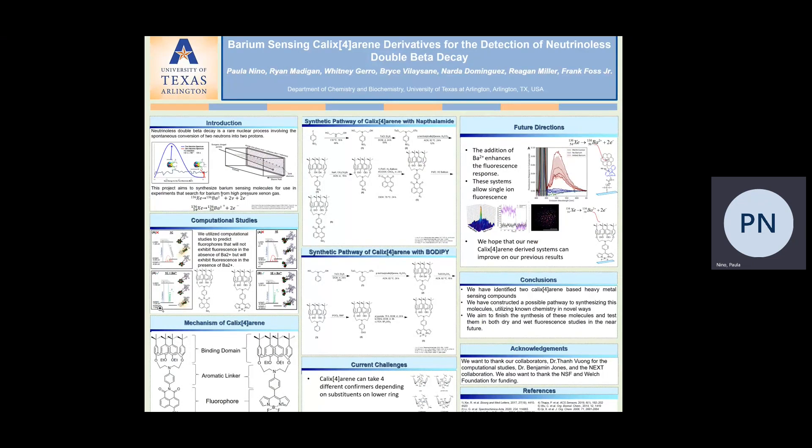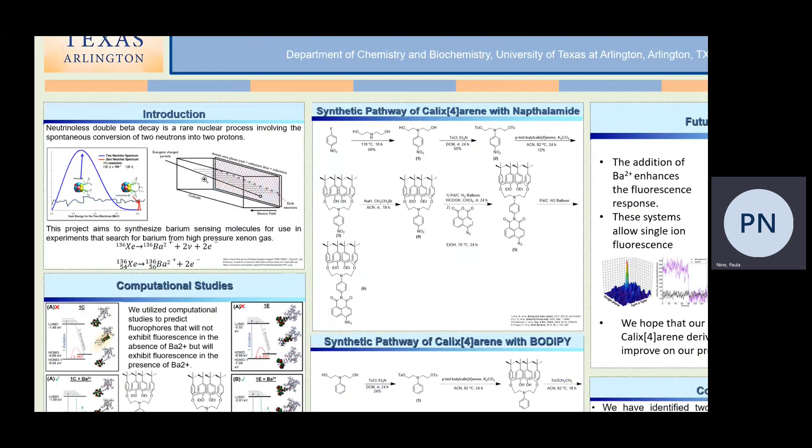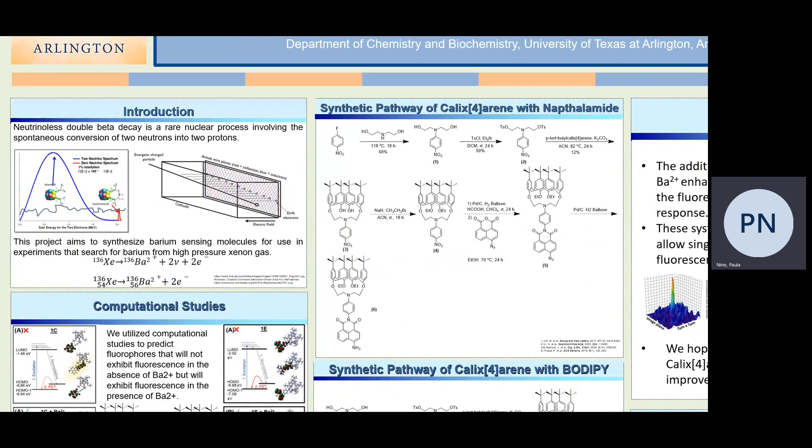To give some background, neutrino-less beta decay is a rare radioactive process involving the spontaneous conversion of two neutrons into two protons. On the graph displayed to the left, we see that there are two types of double beta decay. The first displays a spontaneous emission of two electrons and neutrinos, concluding in a small amount of energy and a higher abundance. The second double beta decay emits two electrons and two neutrinos which annihilate, therefore leading to a larger sum of energy but a lower abundance. This process has mathematically been proven but experimentally not seen.